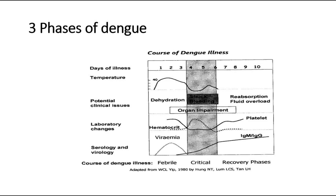In the recovery phase, plasma leakage stops and the extravascular compartment fluid is slowly reabsorbed. Due to this gradual reabsorption, there might be hypervolemia and pulmonary edema if IV fluid therapy has been excessive. It is therefore important to control the amount of fluid given to the patient. The general well-being of the patient also improves in this phase.